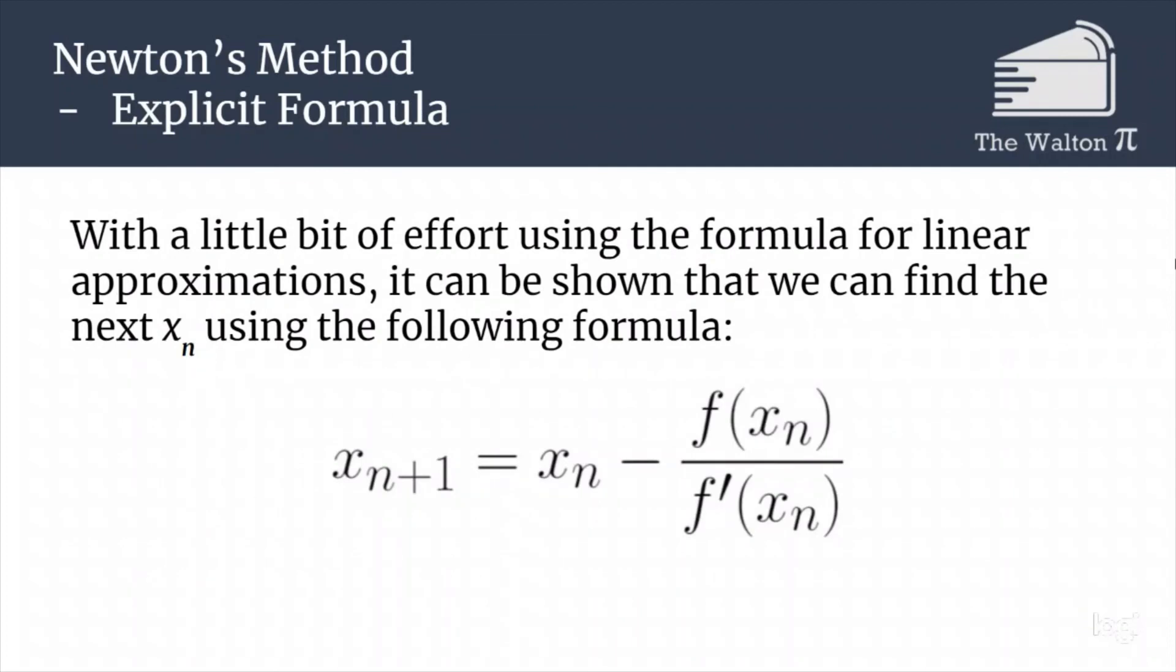And if we want to use a formula to compute those different values, we can find our next x_n by using this formula: x_{n+1} = x_n - f(x_n)/f'(x_n). So this is a way that we could have figured out all of those like x₂, x₃, x₄'s without having to compute the actual linear approximations. Those calculations are just hidden underneath the hood of this formula.